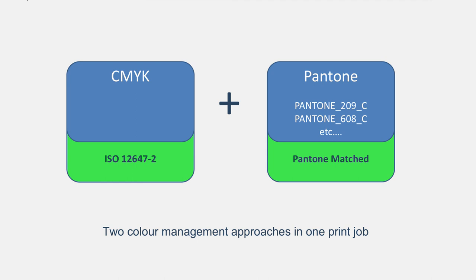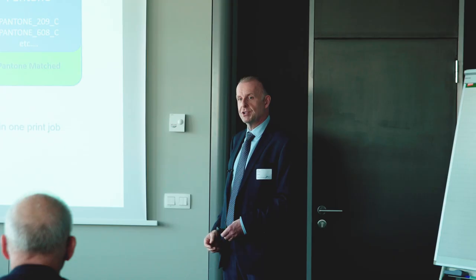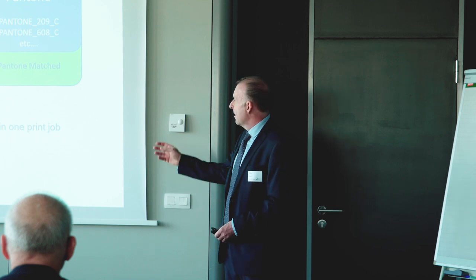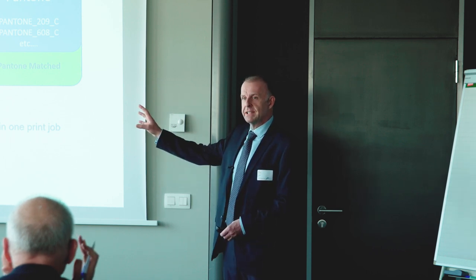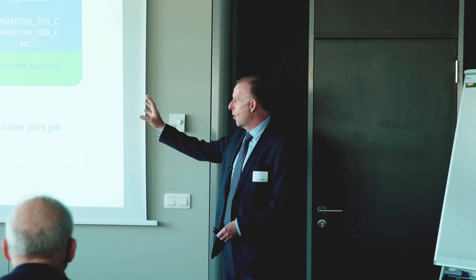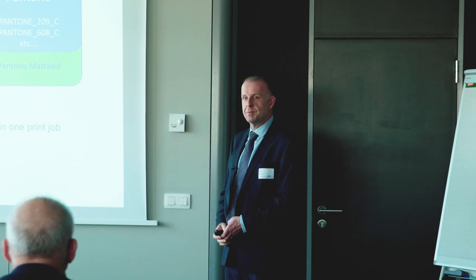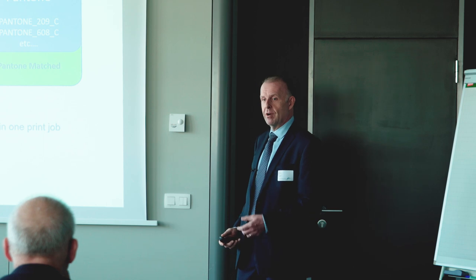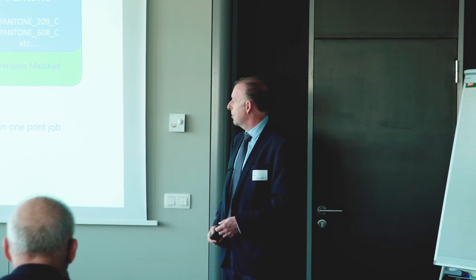How do we achieve this? We essentially have two types of colour management taking place at the same time. For the CMYK elements of a job, we already have a colour profiling system, and that is used in the regular way. But when we actually detect Pantone colours, we apply the alternative Brand Colour Optimiser approach to colour in the same job. So we're not trying to stretch an existing colour management system or compromising on existing colour management. What we're doing is adding another layer on top of that.